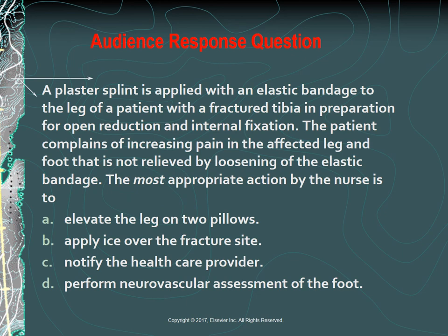NCLEX question: A plaster splint is applied with elastic bandage to the leg of a patient with a fractured tibia in preparation for open reduction and internal fixation. The patient complains of increasing pain in the affected leg and foot not relieved by loosening of the elastic bandage. The most appropriate action is D—perform a neurovascular assessment of the foot. Prompt, accurate diagnosis of compartment syndrome is critical. Regular neurovascular assessments should be performed and documented. Pain unrelieved by drugs is one of the first indications. Know your six P's: paresthesia, pain, pressure, pallor, pulselessness—a late sign—and paralysis—also a late sign.